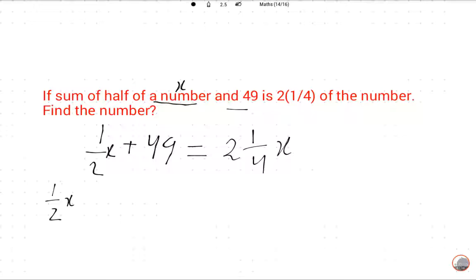Now we will solve. We will arrange: 1 upon 2 x is equal to, so this is 9 upon 4 minus, 9 upon 4 x is equal to minus 49.